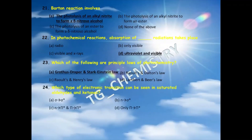Twenty-fourth question: which type of electronic transition can be seen in saturated aldehydes and ketones? Options: A) sigma to sigma*, B) n to sigma*, C) n to pi* and pi to pi*, D) only pi to pi*. In aldehydes and ketones, both pi to pi* and n to pi* transitions are possible, so option C is the right answer.